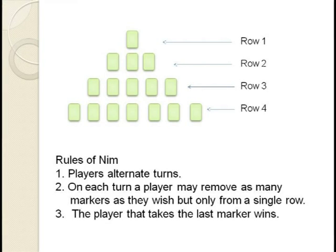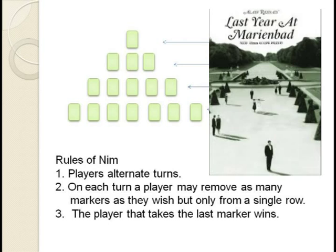The basic game consists of a finite group of markers laid out into rows with any number of markers you wish in each row. In the diagram here we have 16 markers in four rows with one, three, five, and seven markers respectively. This particular arrangement is known as the Marienbad pattern after the otherwise forgettable movie last year at Marienbad.